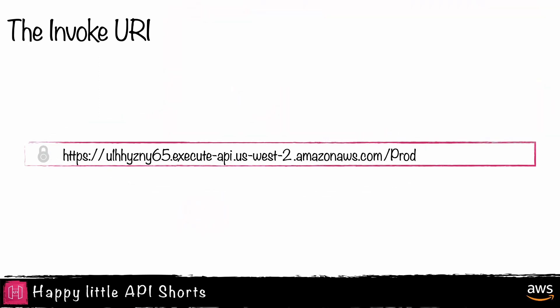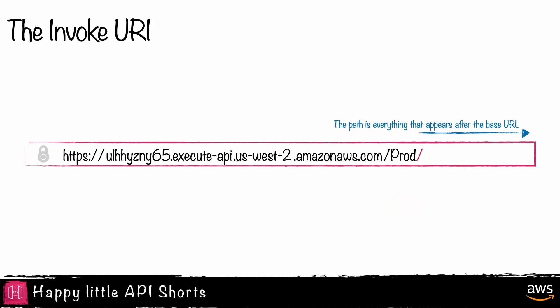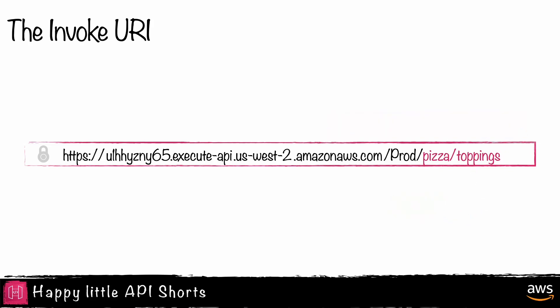The final part of the Invoke URL is the path. The path is everything that appears after the base URL. The path can be as simple as a single forward slash, known as the root, or it can be complex with many segments of static and dynamic values. The segments of the path and how API Gateway evaluates incoming requests for routing are discussed in a separate video.